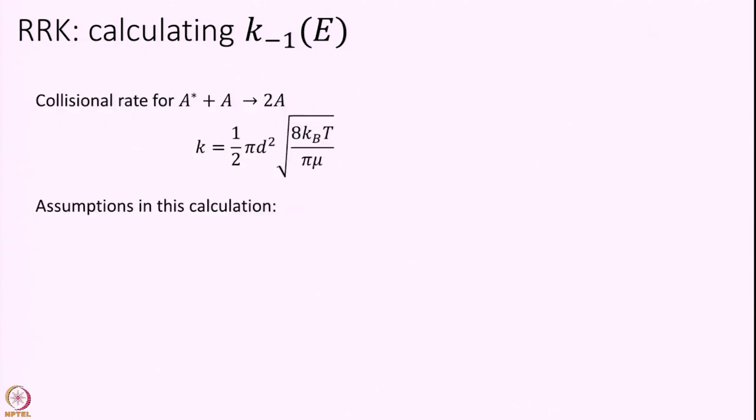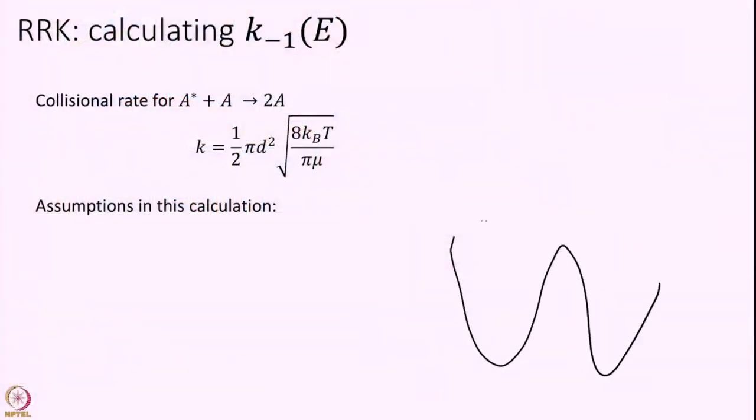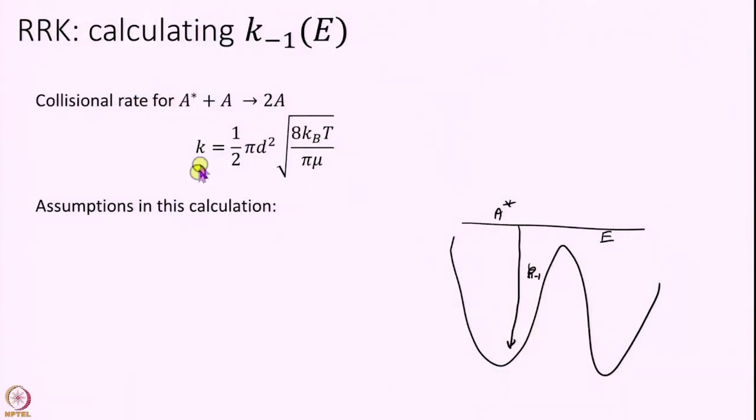The second constant is K−1. The prescription given was to calculate K−1 using collision theory — that is not the big approximation here. K−1 is the rate of losing energy: the idea is that A* is zigzagging at very high energy and collides with some A, losing all of its energy. The collision theory expression for the same atom colliding with itself is given by: K−1 = (1/2) × π × D² × √(8kT/πμ) × [A], where D is the diameter of A and μ is the reduced mass.